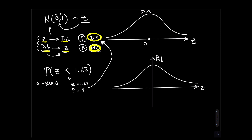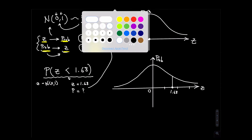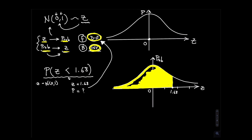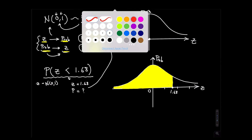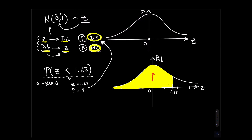How does that translate to a picture? If Z is less than 1.68, and the center is zero, with standard deviation one, then 1 is here, 2 is here, 3 is here — so 1.68 will be somewhere between 1 and 2. Connect it to the curve and that's 1.68. I'm asking you to find the area under the normal curve to the left of 1.68 — essentially the yellow shaded probability given the z-score of 1.68.